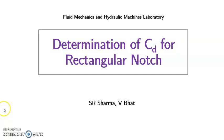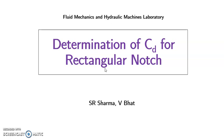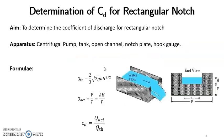Hello everyone. In the previous session we discussed the determination of coefficient of discharge for a V-notch, that is a triangular notch. In this session we will discuss the determination of CD, that is coefficient of discharge, for a rectangular notch. The procedure remains the same; the only difference is that in place of a V-notch we are placing a rectangular notch. The aim of the experiment is to determine the coefficient of discharge for a rectangular notch.